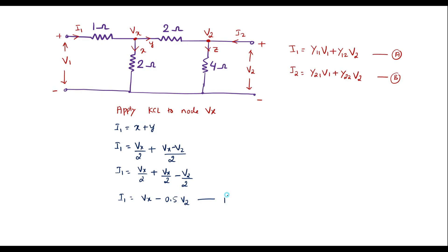From this circuit I can write: i1 = (v1 - vx)/1 = v1 - vx, which gives us vx = v1 - i1. Now let me substitute this vx value into equation 1.